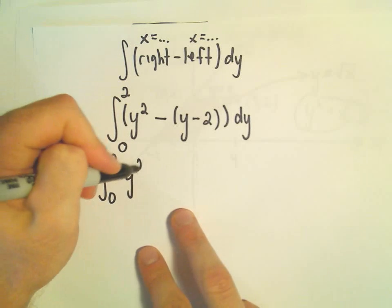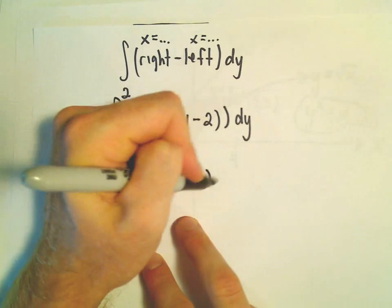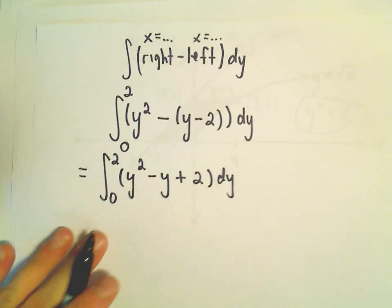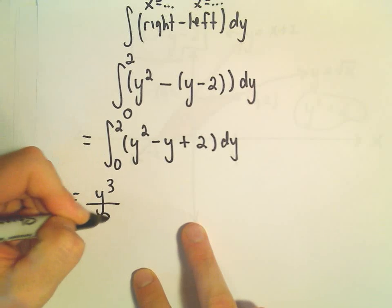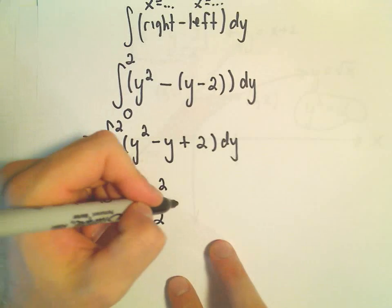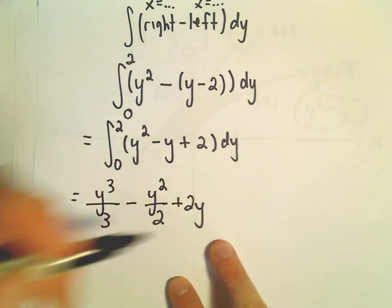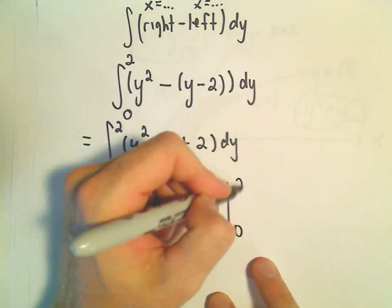So 0 to 2, y squared, I'm just going to distribute. That'll be minus y plus 2 dy. So now if we calculate our antiderivative, we'll get y to the third over 3 minus y squared over 2 plus 2y. And then again, we're evaluating all of this from 0 to 2.